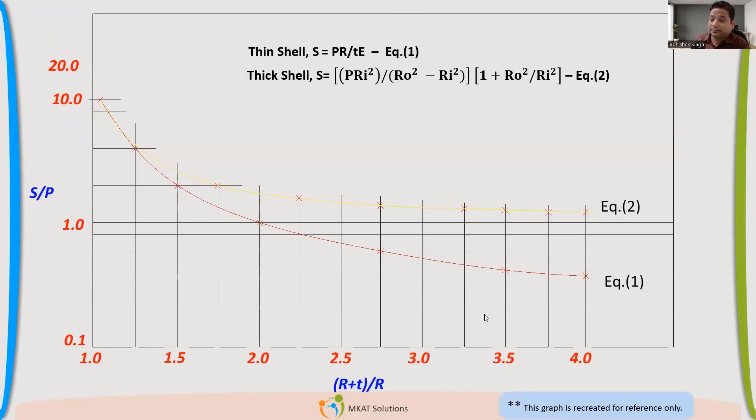Before going to that ASME formula, if we see this graph, try to see this graph. This is a very important graph. What equations I am using? Equation one, which is PD/2T and the E efficiency we have taken. So that is the equation first. You can see that in red color. That is the equation for PD/2T or PR/T.